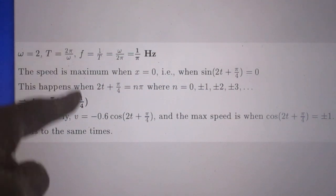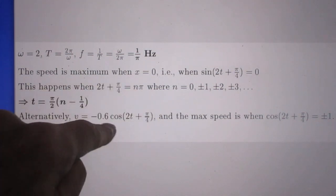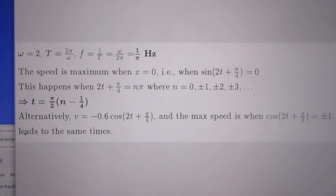Alternatively, if you calculate the velocity which is -0.6 times the cosine of (2t + π/4), then you can find the maximum speed and you find the exactly same times that you find here.